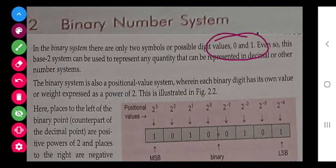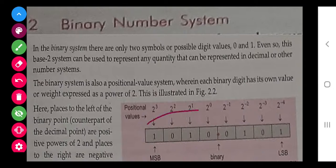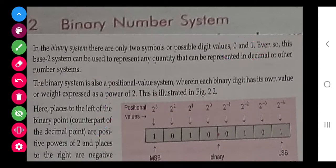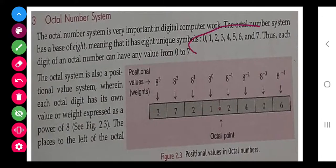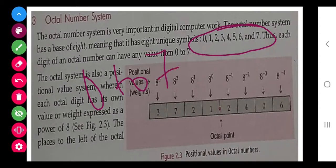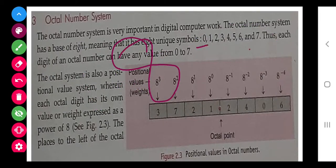Next is the binary number system. Binary includes only two digits: 0 and 1. You all know this as machine language — decimal is our number system and binary is what computers understand. The base value of binary is 2. Next is octal, which includes digits 0 to 7, so its base is 8.